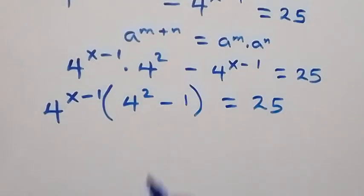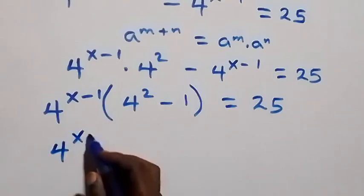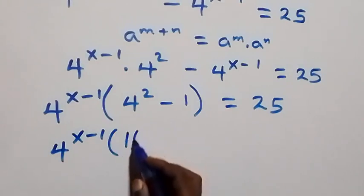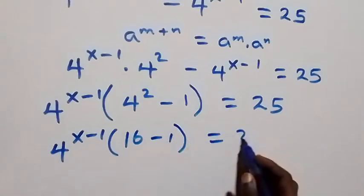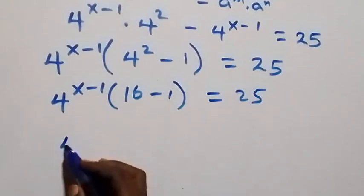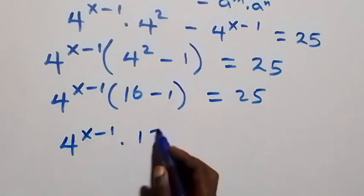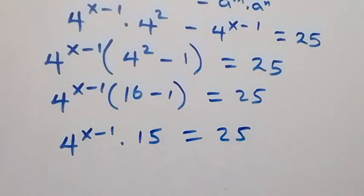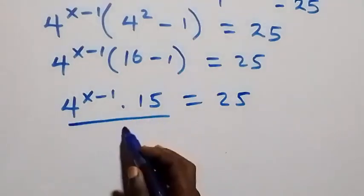From this bracket, we have four raised to power x minus one, then in brackets four squared — four times four is 16 — minus one. So this becomes four raised to power x minus one times 15 equals to 25.